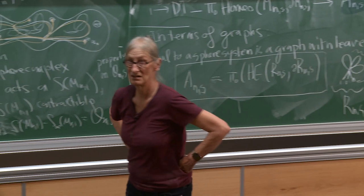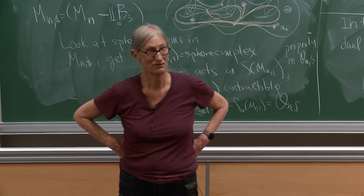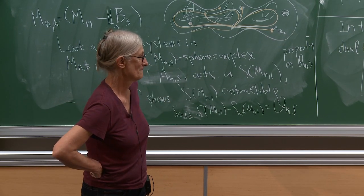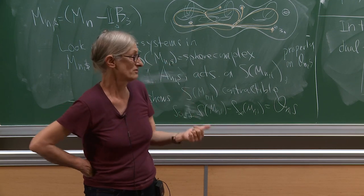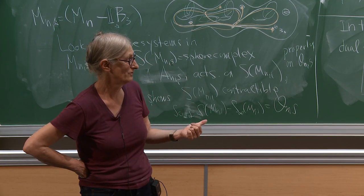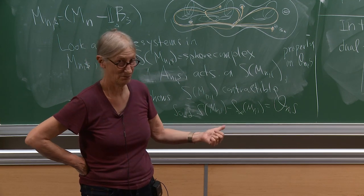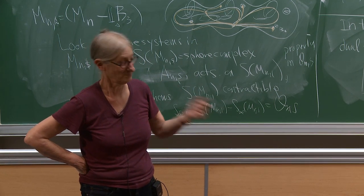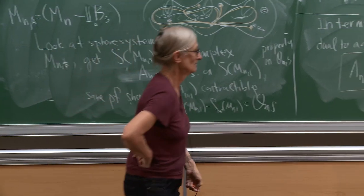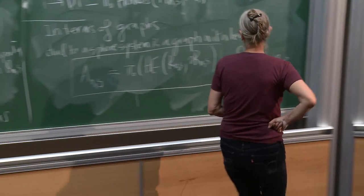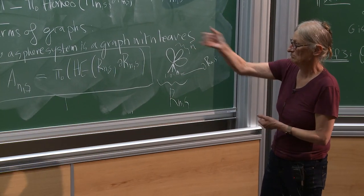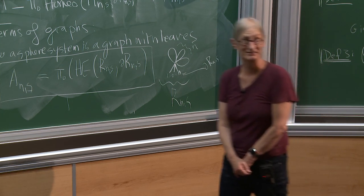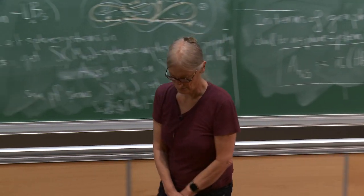When you try to prove things about Out(Fn), even if you're only interested in Out(Fn), these groups keep inserting themselves — when proving homological stability, duality between homology and cohomology, or calculating the Euler characteristic of the quotient space, they turn up all over the place. So next time, what I'm going to do is tell you what the spine is — that will literally take five minutes — and then show you how to use the spine to do stuff.